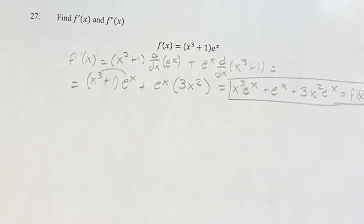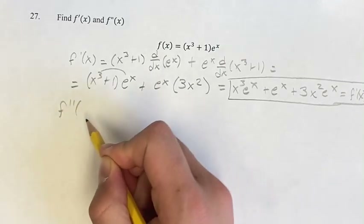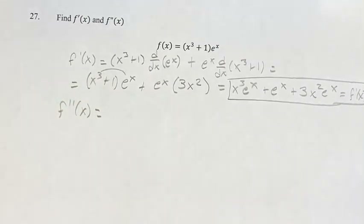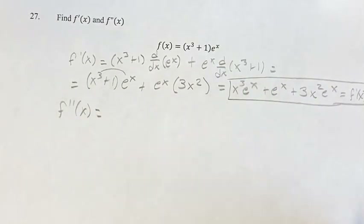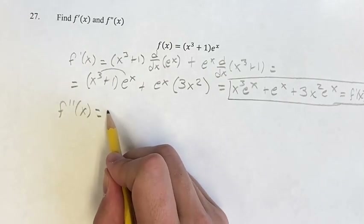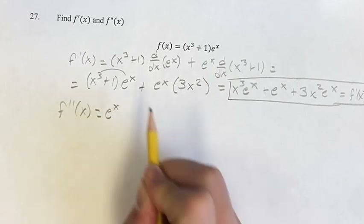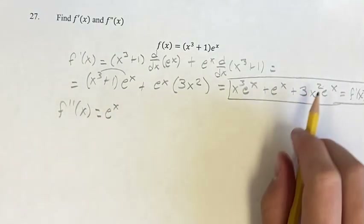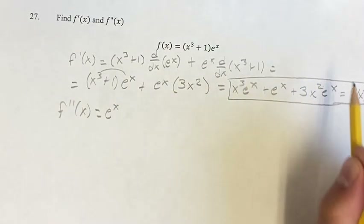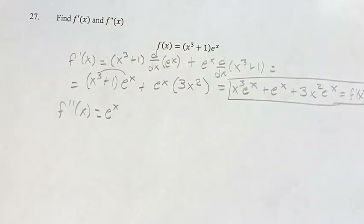Taking the second derivative is just the derivative of the derivative, which in this case is the derivative of all these terms. First of all, we want to take the derivative of e to the x, which is just e to the x. And then we can work with the more complicated ones. So we have two things here, and we're going to use the product rule for both of them.